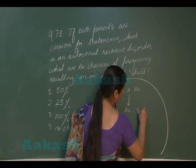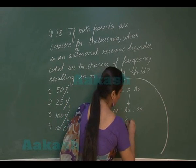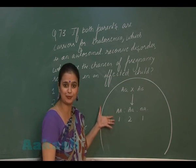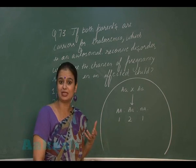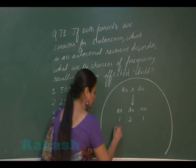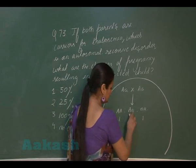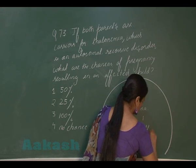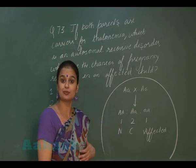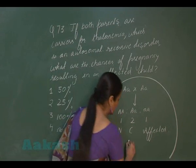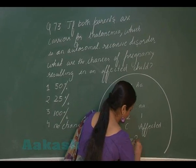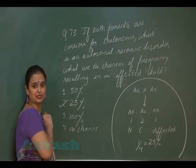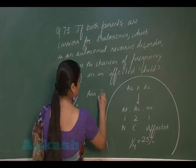After mating, there are three types of zygotic combinations in the ratio of 1:2:1. The homozygous dominant individual will be normal, the heterozygous individual will be a carrier, and the homozygous recessive individual will be affected. The proportion of affected individuals is 1 out of 4, or 25%. So the right answer for question 73 is option 2.